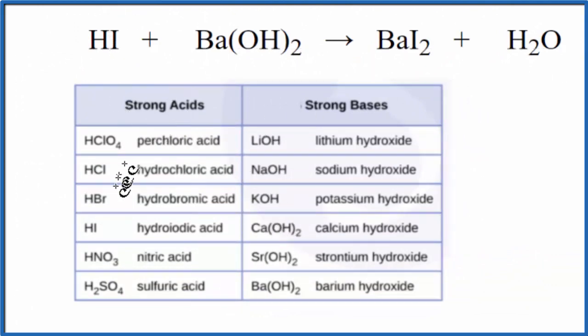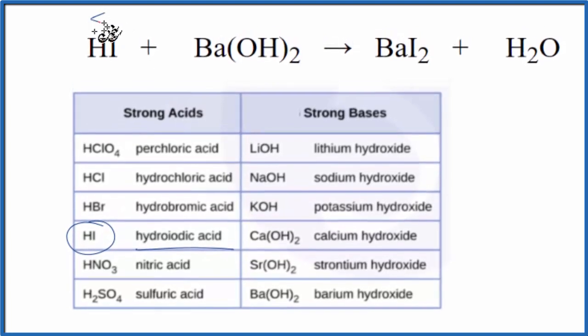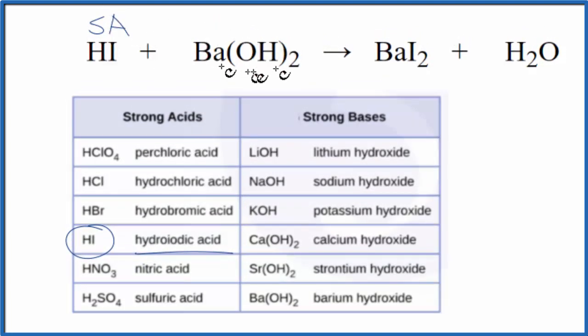We go down, strong acids, here's HI, hydroiodic acid, so it's a strong acid. Barium hydroxide right here, that's a strong base.